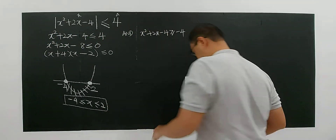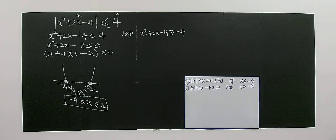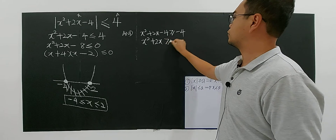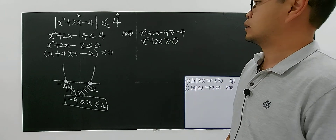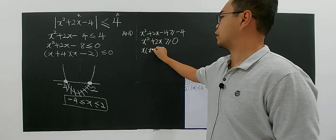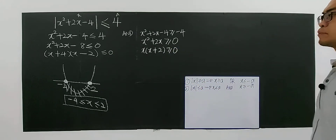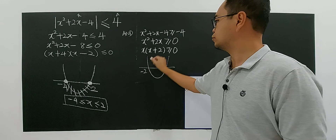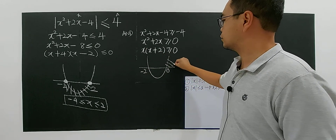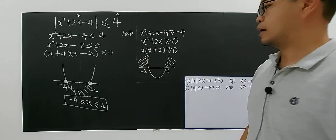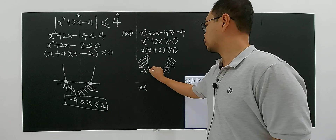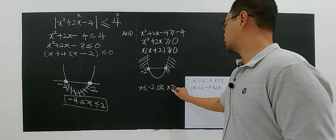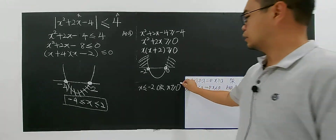Now for the other case: x squared plus 2x minus 4 plus 4 gives x squared plus 2x greater than or equal to 0. You factorize to get x(x + 2). It's quadratic, so we draw a curve with roots at negative 2 and 0, with solid circles. Greater than or equal to 0 means the region above the x-axis, which gives x less than or equal to negative 2, or x greater than or equal to 0.